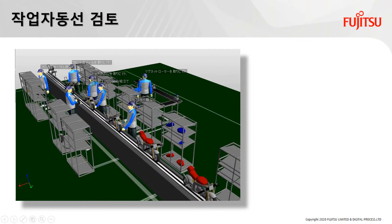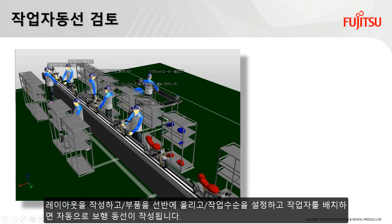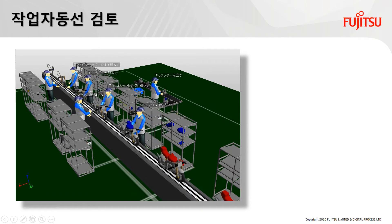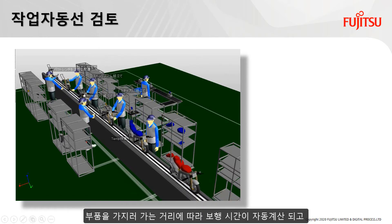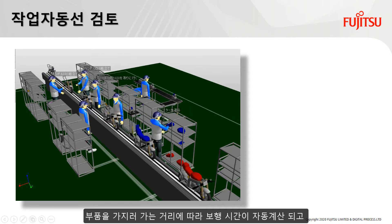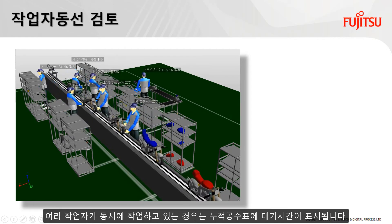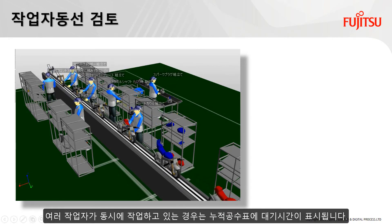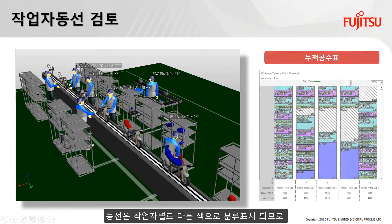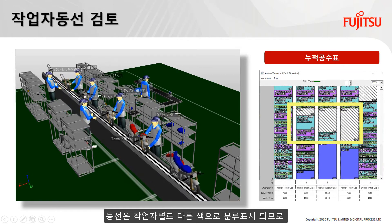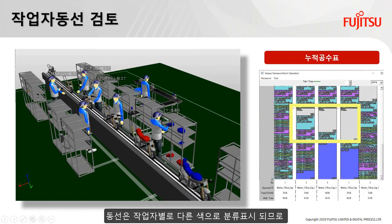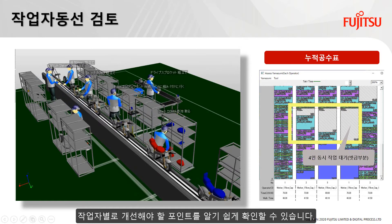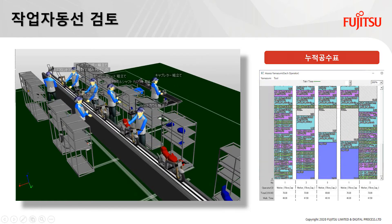Create a production line layout and place the parts to be assembled on the shelves. When the work procedure is set and the worker is placed, the walking route of the worker is automatically created. The walking time is automatically calculated according to the distance the worker goes to pick up the parts. If multiple workers are working at the same time, the waiting time is displayed in the process balance chart. The walking route is color coded for each worker, so you can easily check the points to be improved for each worker.